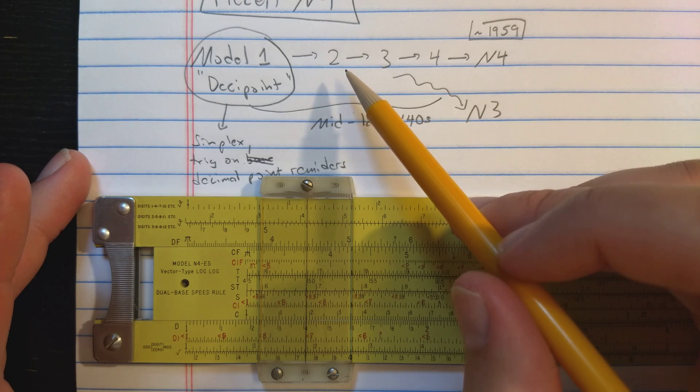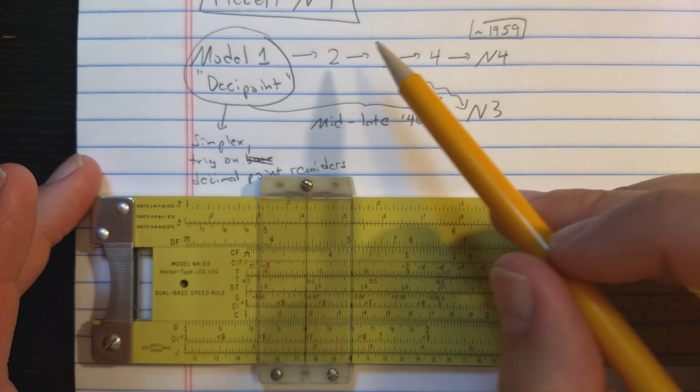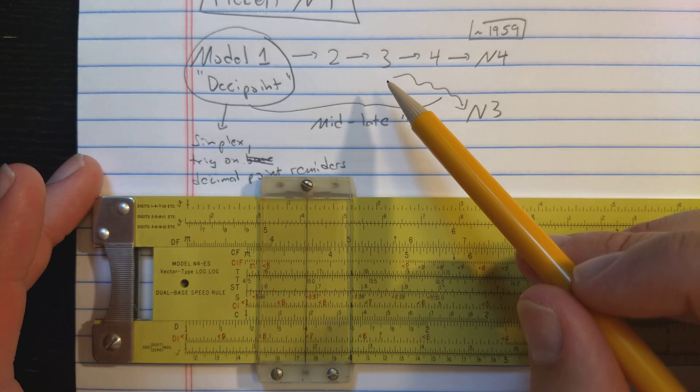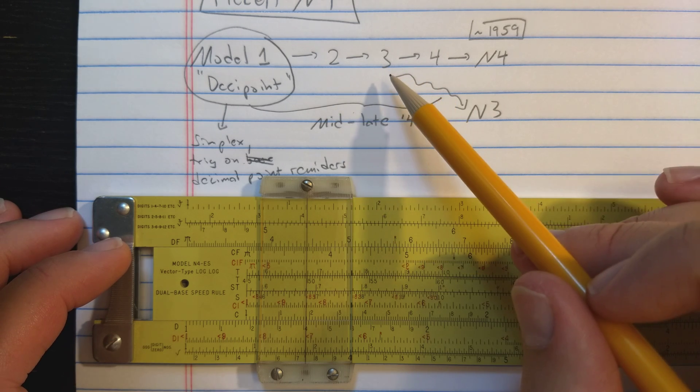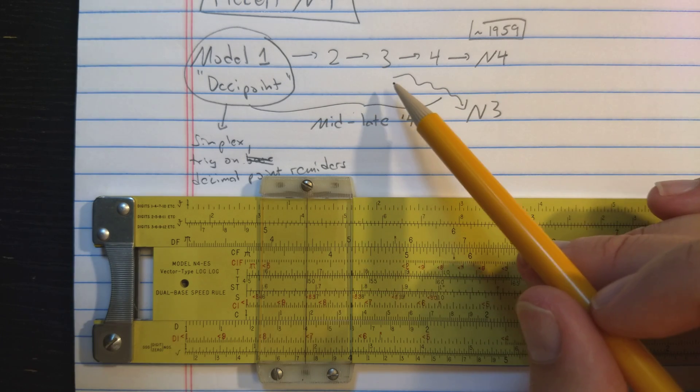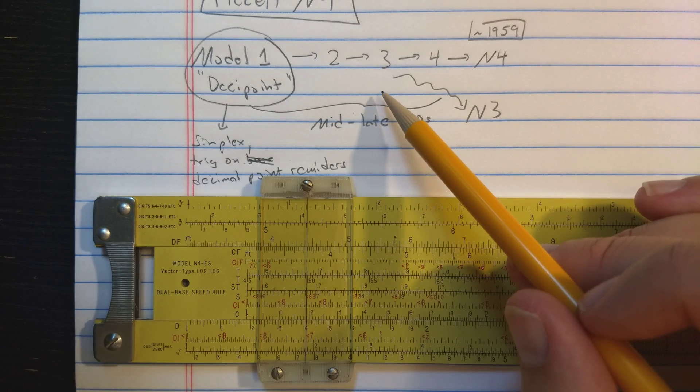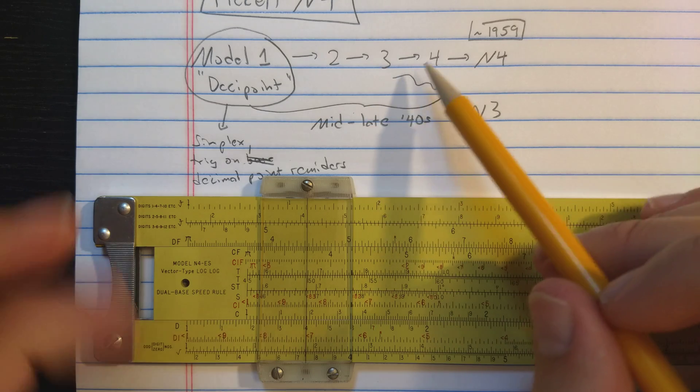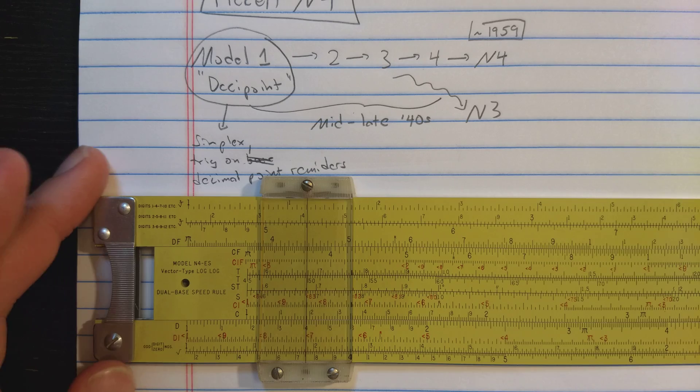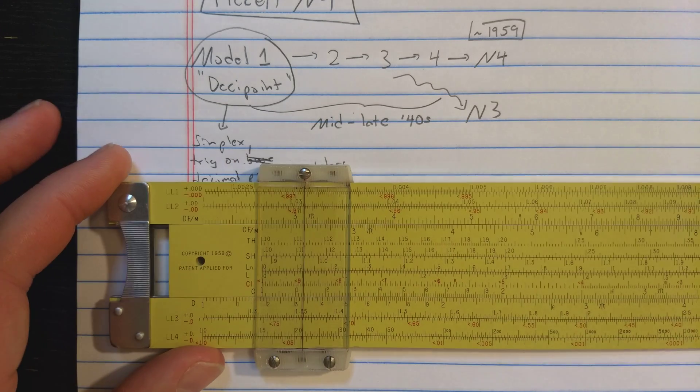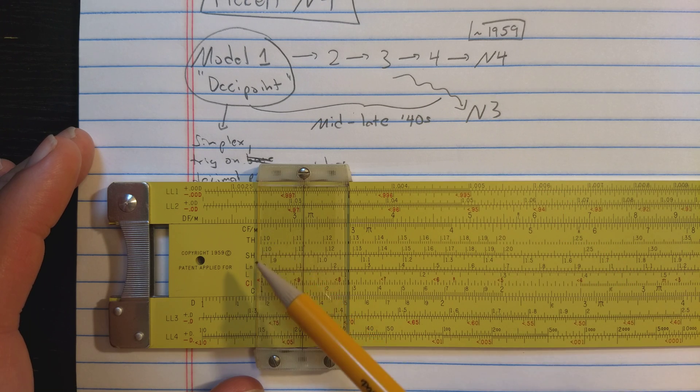They, also in the 40s, make a Model 2 slide rule which adds log-log scales. Then the Model 3, kind of an evolution through the 2 and the 3, lots of different versions. Then they add folded scales, they add some other interesting features. Some things are removed like T2 and then added back. T2 and L, I think, are removed and then added back. But the Model 3 still contains a little bit of space, which is used for decimal point reminders.